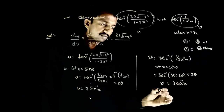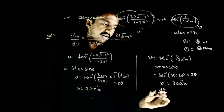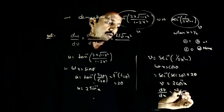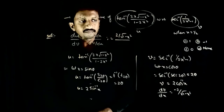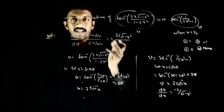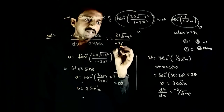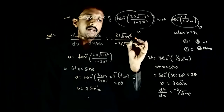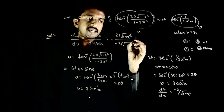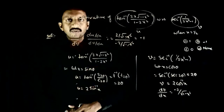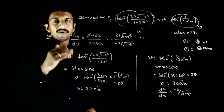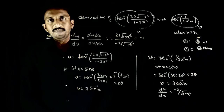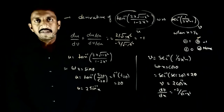So v = 2 cos⁻¹x, and dv/dx = minus 2 divided by √(1-x²). Everything cancels, and you get minus 1 as the answer. Therefore du/dv = minus 1. Option B is the right answer. Thank you.